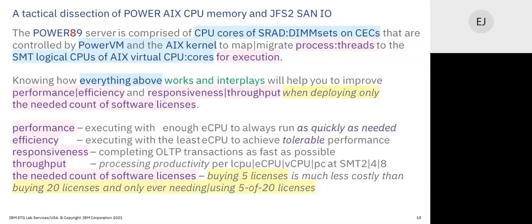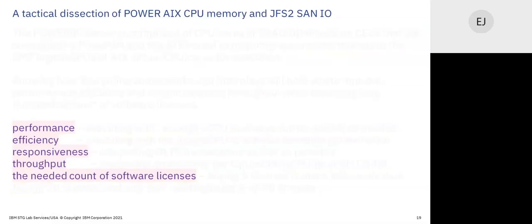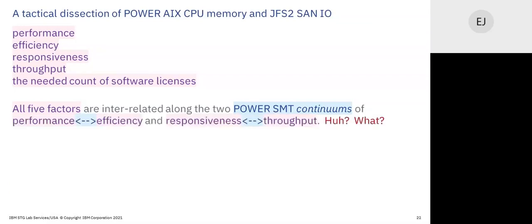So those are the five factors — all interrelated along the two Power SMT continuums: performance efficiency and responsiveness-to-throughput. What I mean by continuum is: if you want high performance you'll have lower efficiency; if you want great efficiency, you can have lower performance. The responsiveness-throughput continuum was actually introduced in 2013 for Power7.